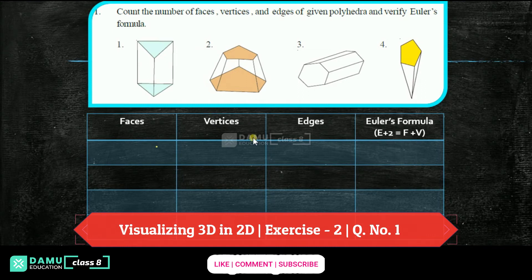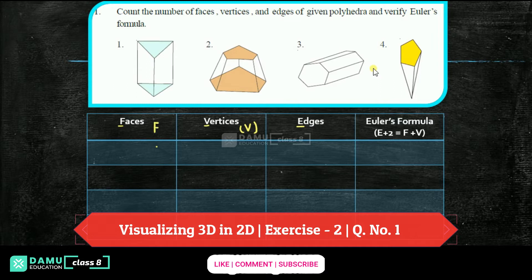So what is that? Count the number of faces, vertices, and edges of given polyhedra and verify Euler's formula. Euler's formula is: edges plus 2 will be equal to faces plus vertices. Faces are denoted by F, vertices by V, and edges by E.